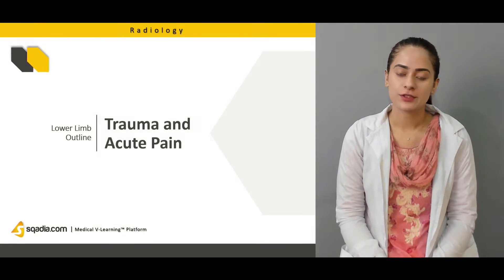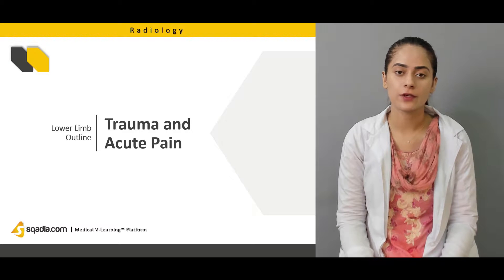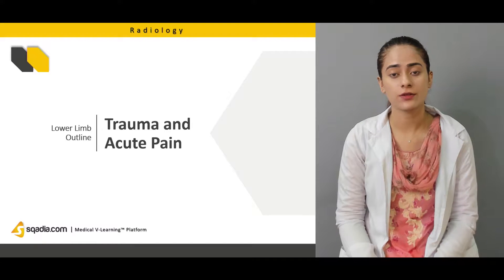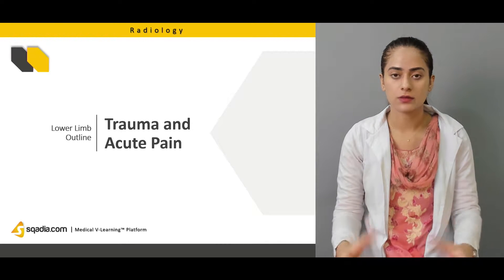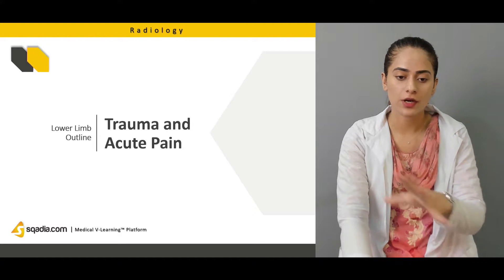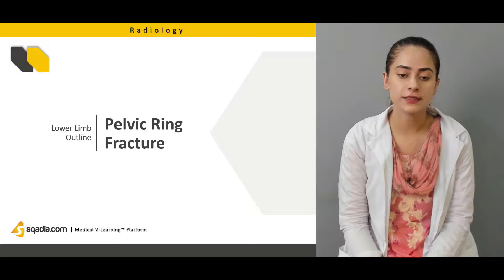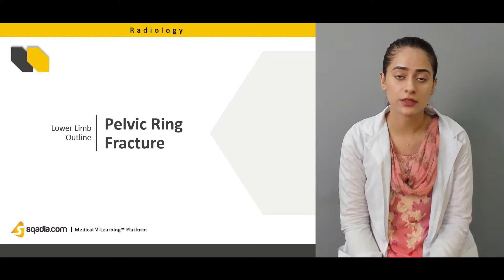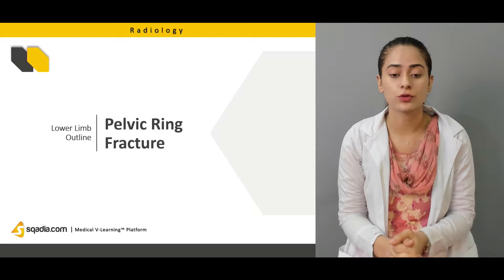We're first going to talk about acute conditions. In acute conditions, we're going to see some fractures — pelvis fractures, femur fractures, and neck of femur fractures. These will be discussed in the acute and trauma section. Acute or trauma cases involve significant blood loss, especially with pelvis fractures, and we're going to talk about that as well.